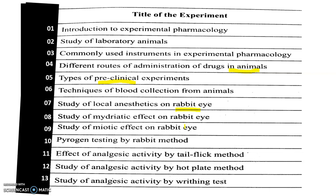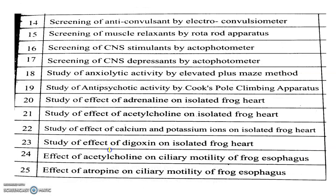Experiments seven, eight, and nine all depend on the animal rabbit, and the sense organ used is the eye. With the help of the rabbit eye, we can study local anesthetics as well as miotic and mydriatic effects. Then, we study pyrogen testing — with the help of some instruments, we study the effect of pyrogens on the rabbit. Experiment number eleven is analgesic activity using the tail flick method; twelve is the hot plate method — the study and effect is the same. Thirteen is analgesic activity using the writhing test.